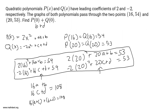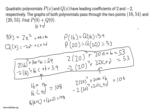Next, we add the two equations for x = 20. The left-hand side becomes 2(20²) + 20a + b + (-2(20²) + 20c + d), which equals 53 + 53 = 106. The same cancellation happens — the 2(20²) and -2(20²) cancel out — leaving 20a + b + 20c + d = 106. Grouping: 20(a + c) + (b + d) = 106.